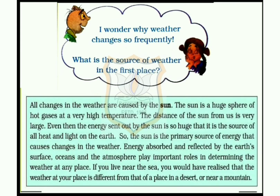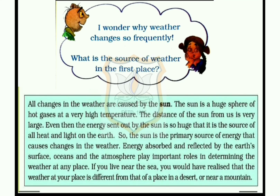Now, why does weather change so frequently, and what is the source of weather in the first place? All changes in the weather are caused by the sun. The sun is a huge sphere of hot gases at a very high temperature. The distance of the sun from us is very large, yet the energy sent out by the sun is so huge that it is the source of all heat and light on the earth.